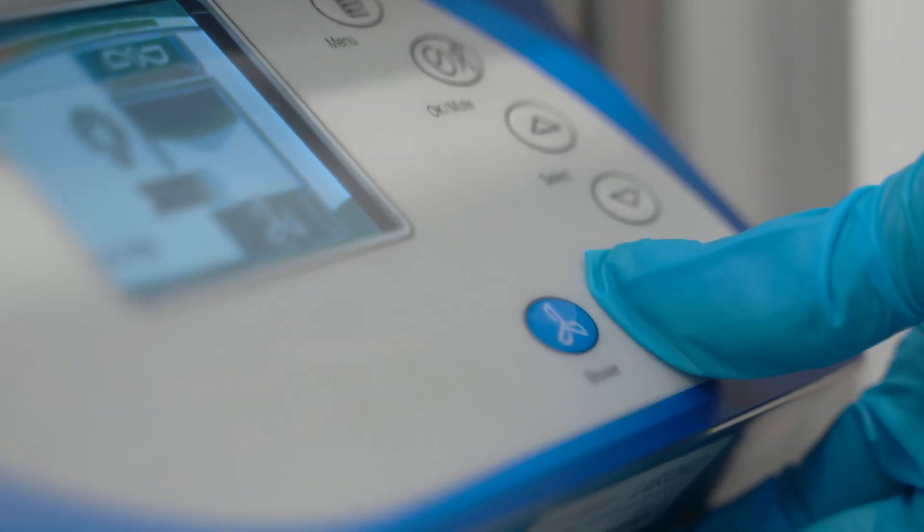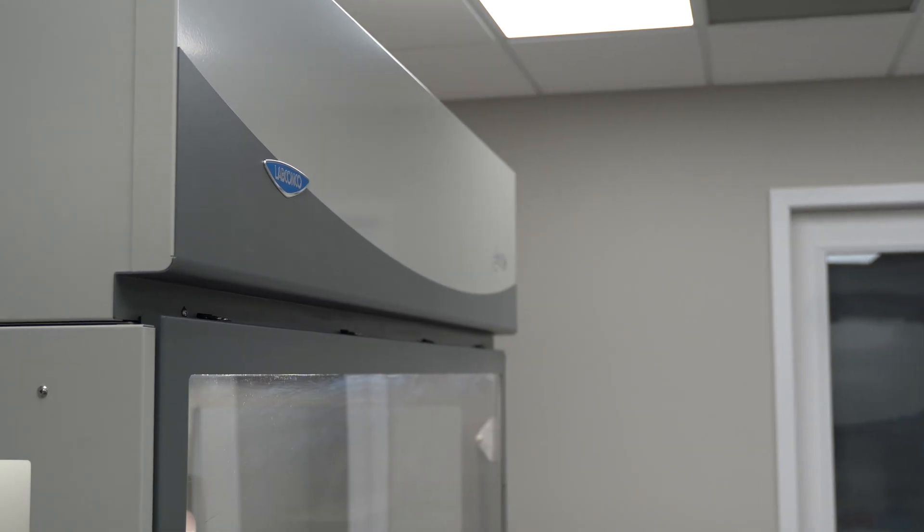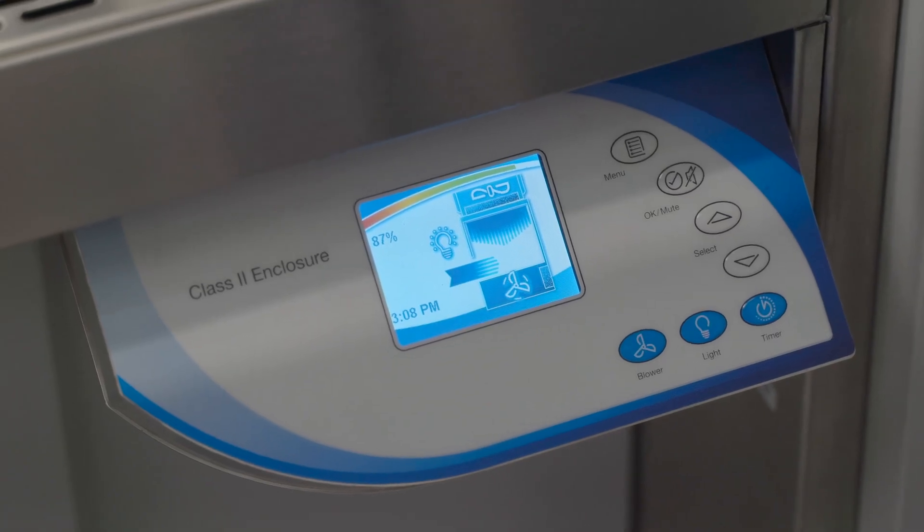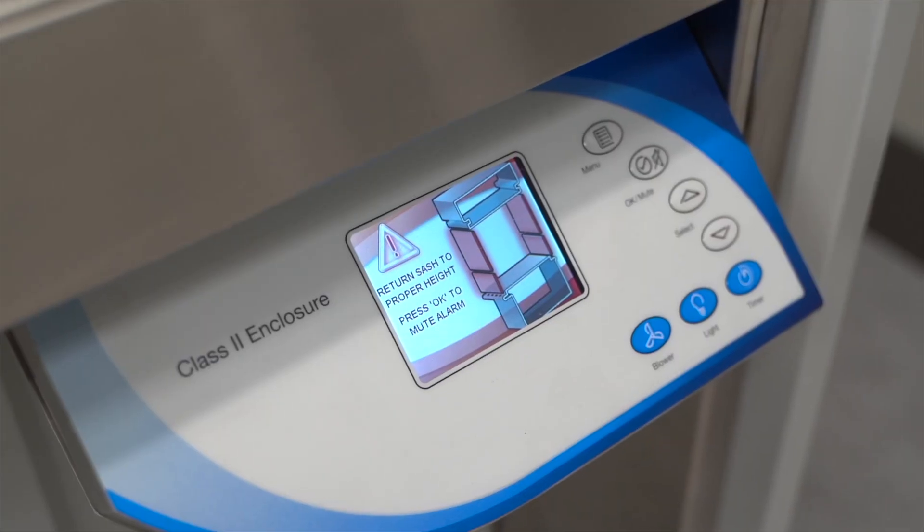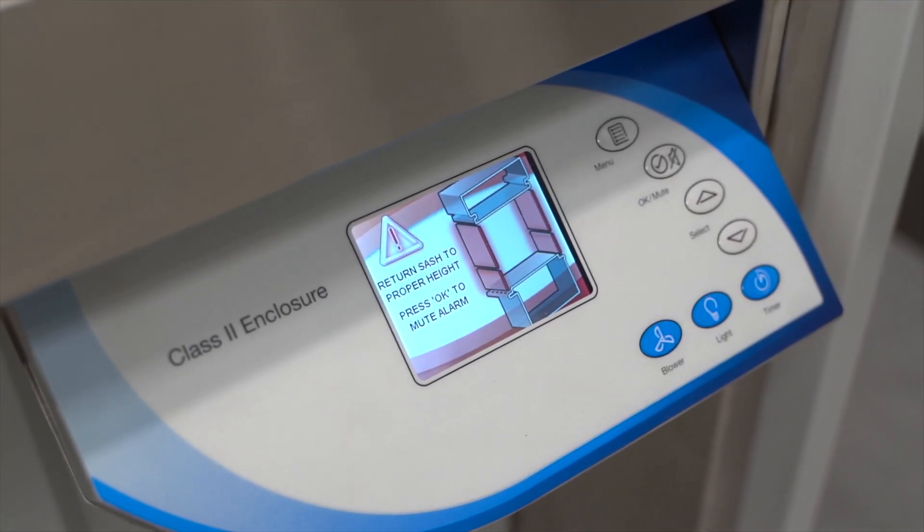The LogicView is powered by MyLogic OS, an intelligent platform controlling all aspects of the enclosure. MyLogic clearly displays key information such as remaining filter life, alerts, and alarms. It also communicates with instruments to engage safety interlocks, pausing movement when the sash is in an unsafe position.